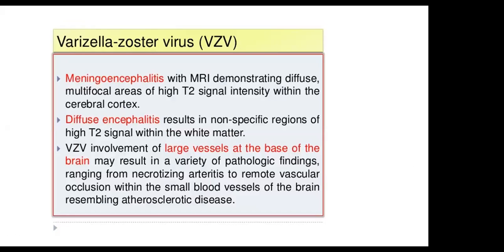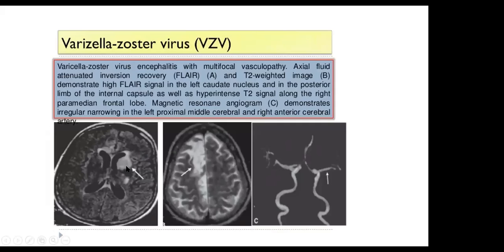Varicella-zoster virus may present as meningoencephalitis, with MRI demonstrating diffuse multifocal areas of higher T2 signal intensity within the cerebral cortex. Diffuse encephalitis results in non-specific regions of higher T2 signal within the white matter. Involvement of the vessels at the base of the brain may result in pathologic findings ranging from necrotizing arteritis to vascular occlusion within small vessels. A case shows FLAIR with abnormal hyperintense signal in the caudate nucleus head and posterior limb of the internal capsule, and MRI showing narrowing of the left MCA and right ACA.